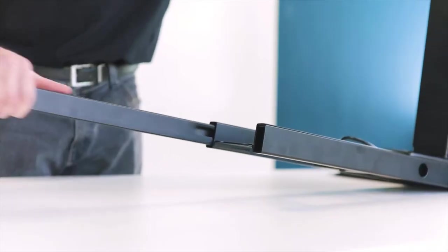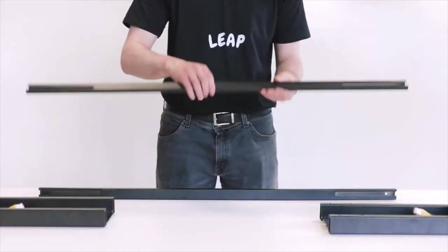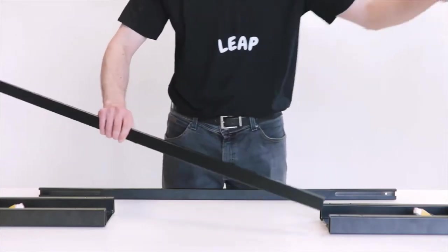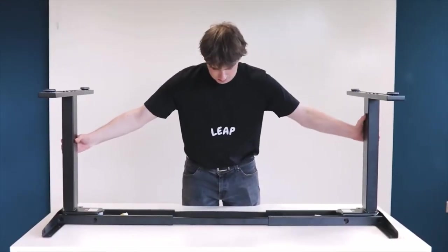When this is finished, take the centre rails that we put aside earlier and place them down with the grooves facing inwards. Make sure that the thicker ends are closer to the floor. You can now bridge the two legs together.